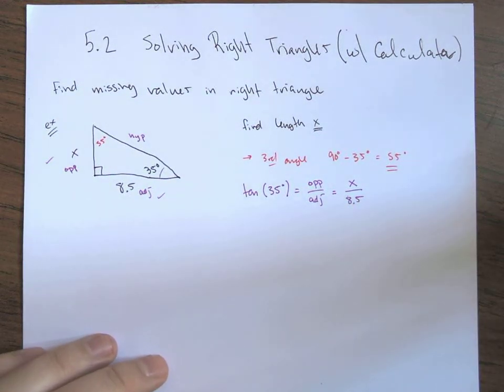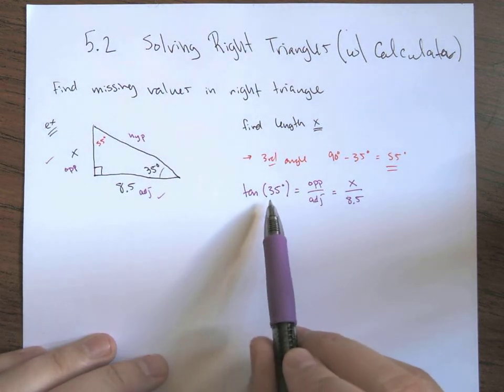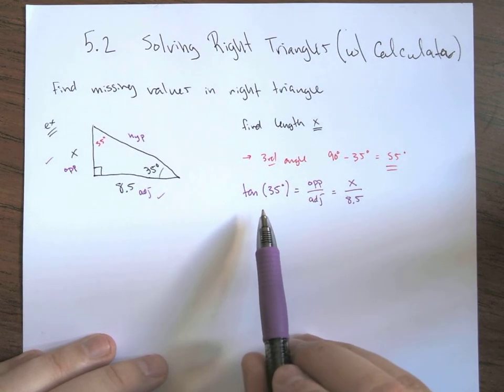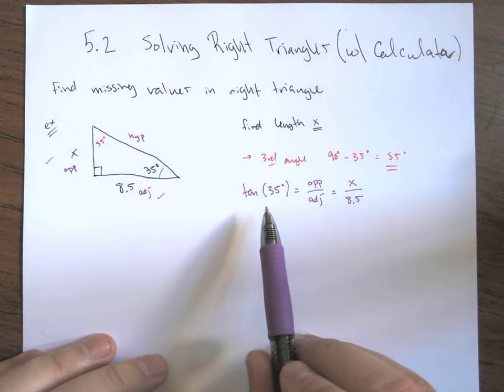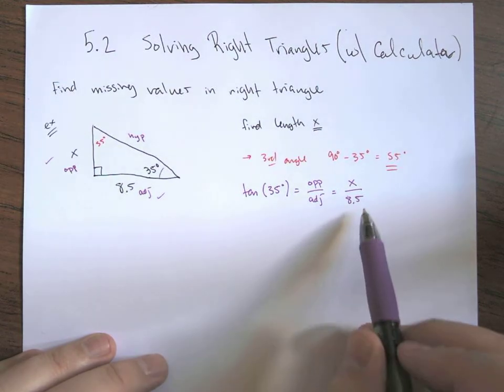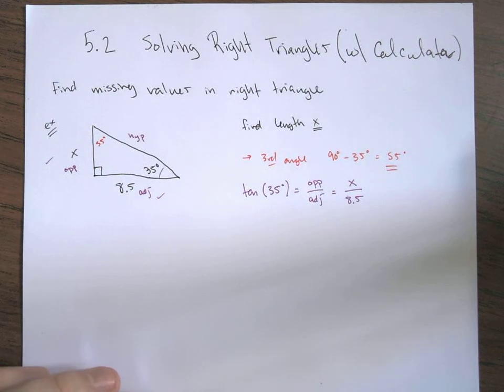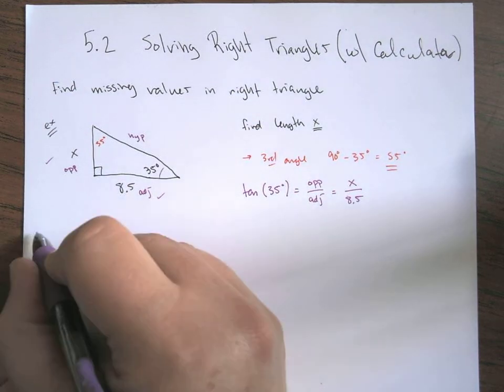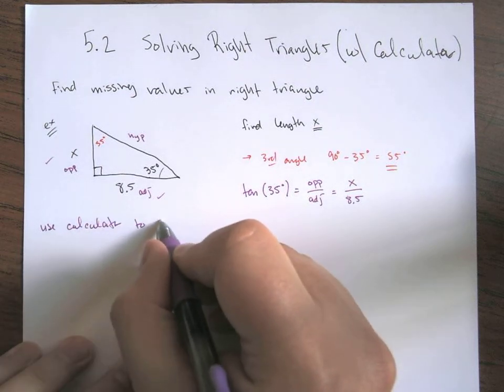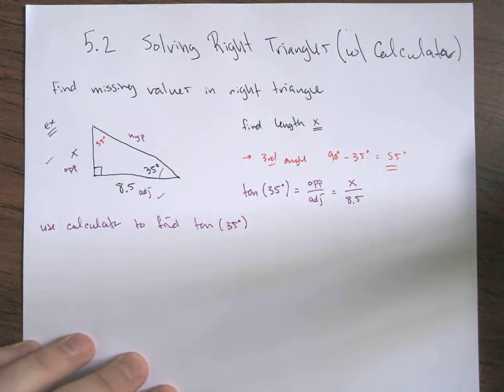And so this is the point where we say, in theory, I have tangent of 35 degrees is x over 8.5. If I knew what the tangent of 35 was, I could really do something here. Because then I have a number, I have a number here, and I just have this one variable. We don't have a special triangle for 35, right?